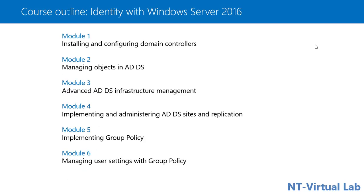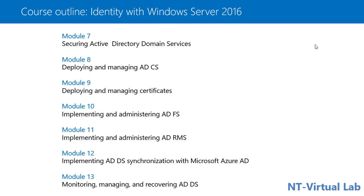Part 3 covers identity with Windows Server 2019. Topics include installation and configuration of Active Directory Domain Services, installing and configuring domain controllers, managing AD DS objects, advanced AD DS infrastructure management, implementing and administering AD DS sites and replication, implementing Group Policies, managing user settings with Group Policies, securing Active Directory Domain Services, and deploying and managing Active Directory Certificate Services.